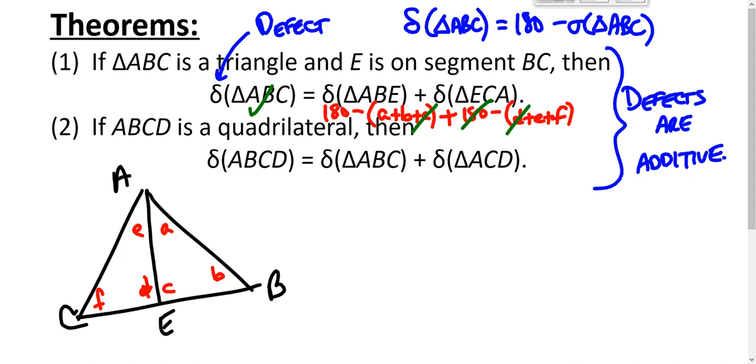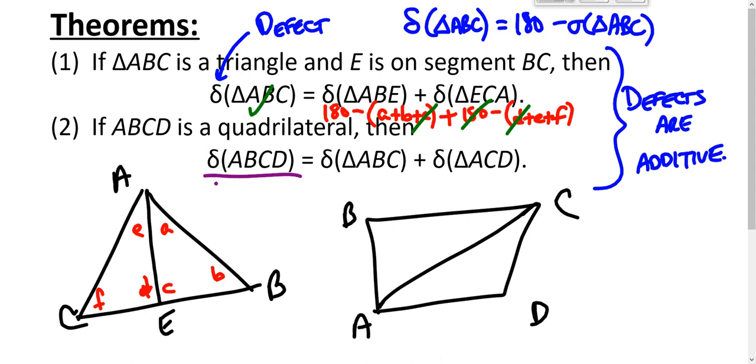Then you've got quadrilateral ABCD. Defect of ABC plus defect of ACD. So when we say the defect of quadrilateral ABCD, that's the gap to 360: 360 minus the angle sum of ABCD.